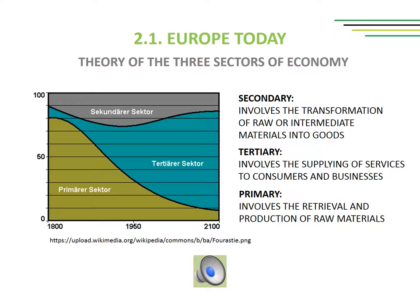The secondary sector involves the transformation of raw or intermediate materials into goods, e.g. manufacturing steel into cars or textiles into clothing. A builder and a dressmaker would be workers in the secondary sector.